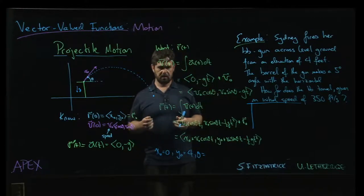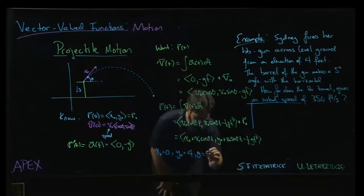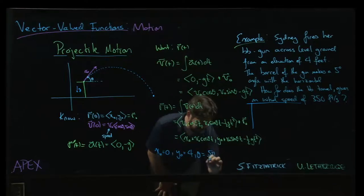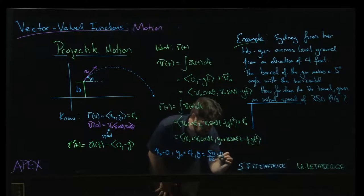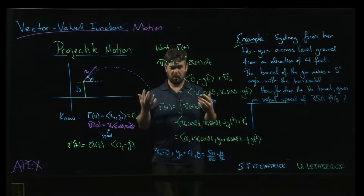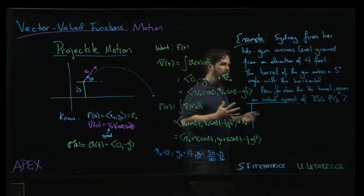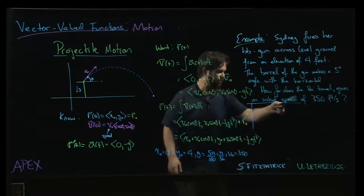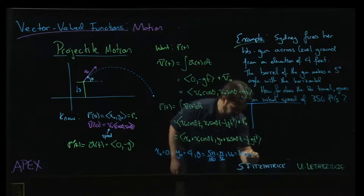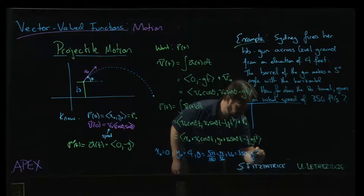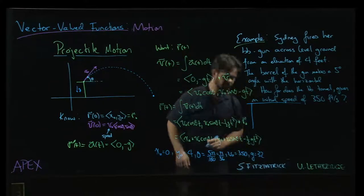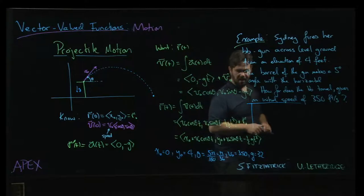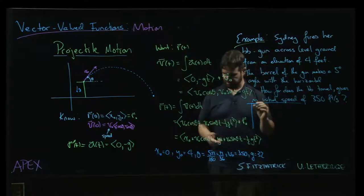So we can put our calculator in degree mode, or we can convert to radians—that's 5π/180 or π/36. We have v₀ is going to be 350 as given, and g, because we're using feet, will be 32.